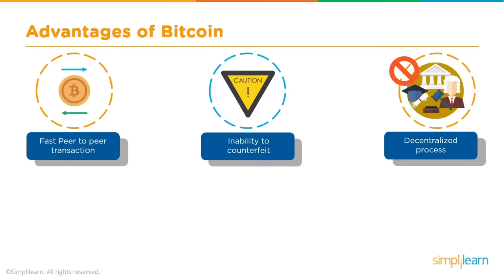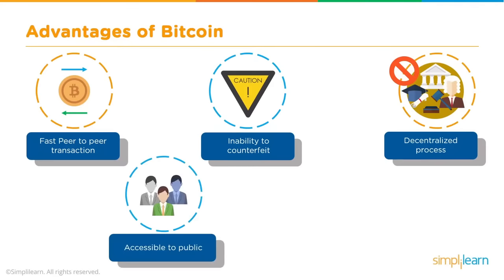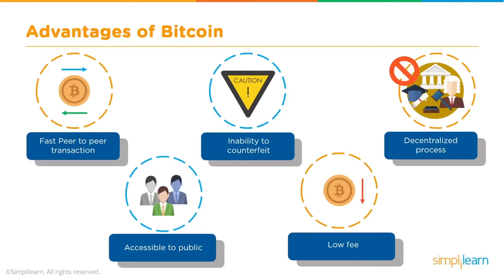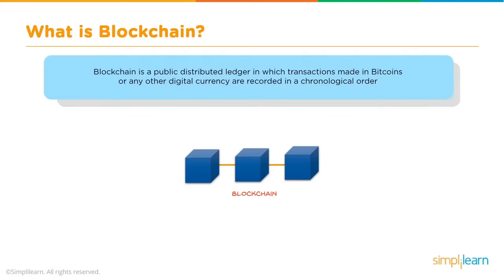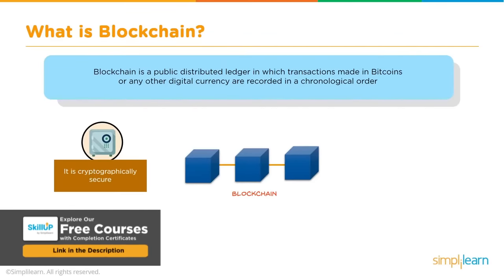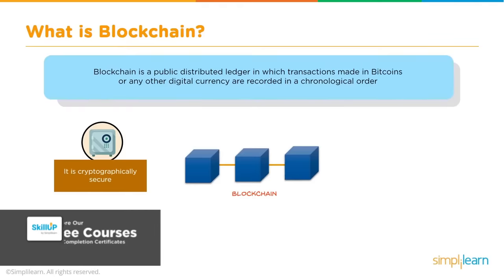All information is publicly accessible on a public ledger — anyone can view transactions and the volume of transactions happening on the Bitcoin network — and transaction fees are comparatively low compared to other digital transaction mediums. Bitcoin runs on the underlying technology of blockchain. Blockchain is a public distributed ledger in which transactions made in Bitcoin or any other digital currency are recorded in chronological order. It is cryptographically secure, immutable, and run by a decentralized system with no centralized authority.